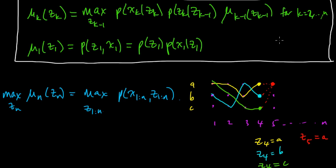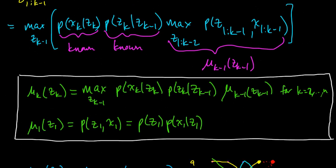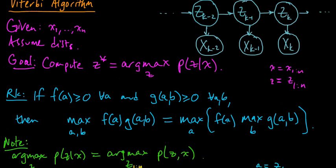You can write down an algorithm to implement what I described. You do this not just for z_5 equals a, but also for b and c. That completes the full induction step; now you have an optimal path ending at each possible value of z_5. You continue all the way to n, and you're done. That's the Viterbi algorithm — that's how you compute the maximum probability path for a hidden Markov model.